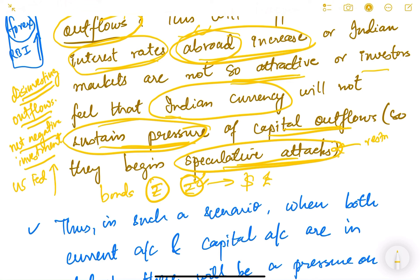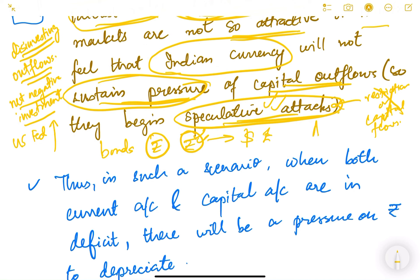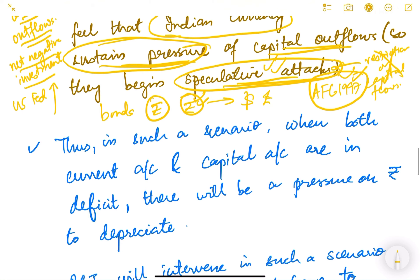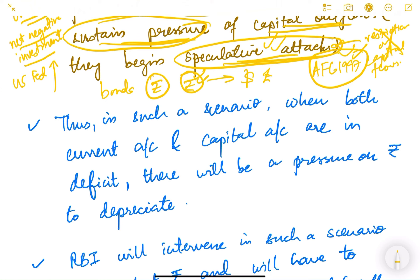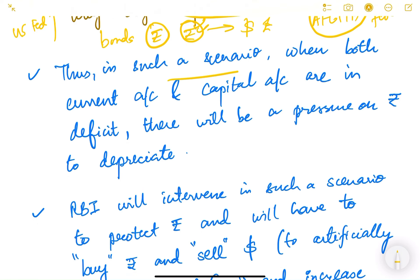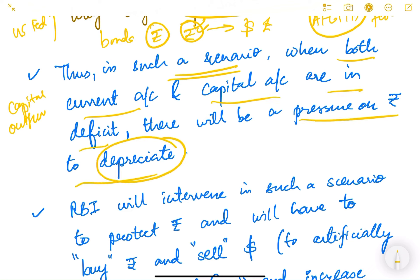Speculative attacks happen when there is no restriction on capital account — people can buy or sell any amount of rupee. This is exactly what happened during the Asian financial crisis of 1997. When both the current account and capital account are in deficit, there will be depreciation pressure on the rupee. Money is going out of the Indian economy — people are selling rupees and purchasing dollars — so there is strong depreciation pressure on the rupee.